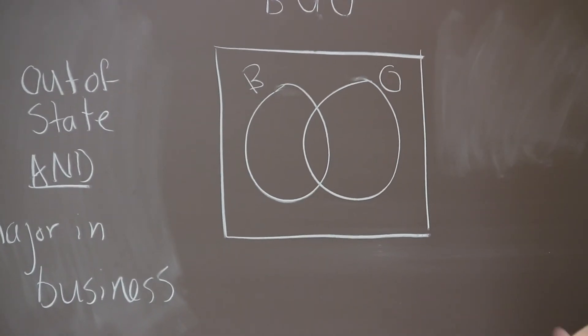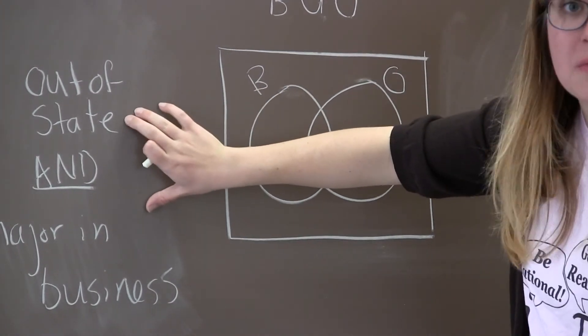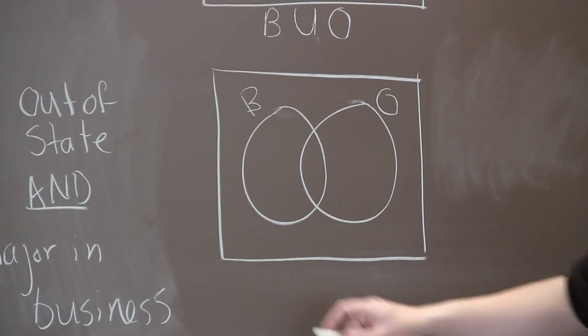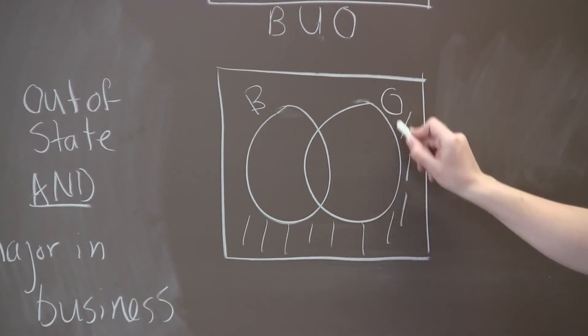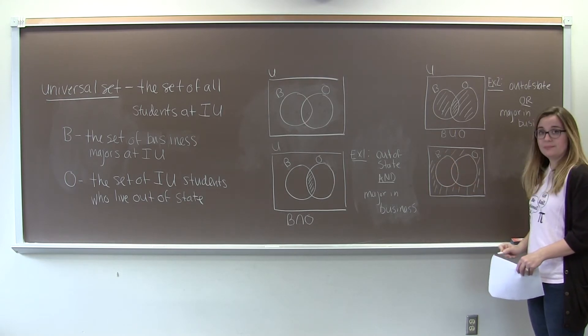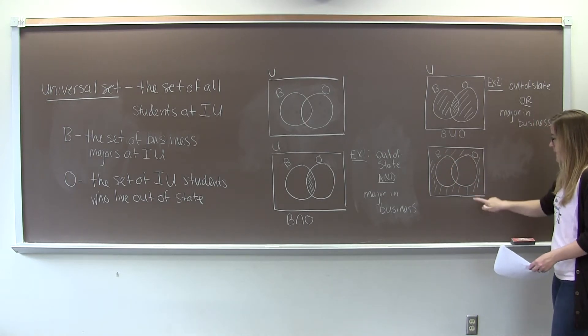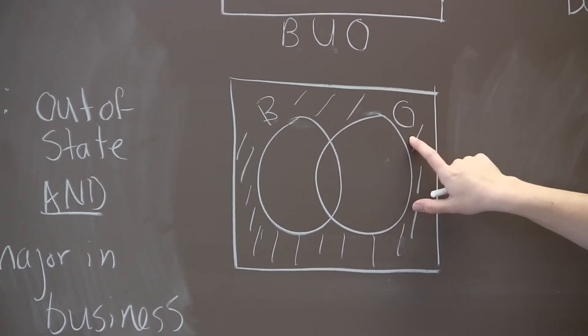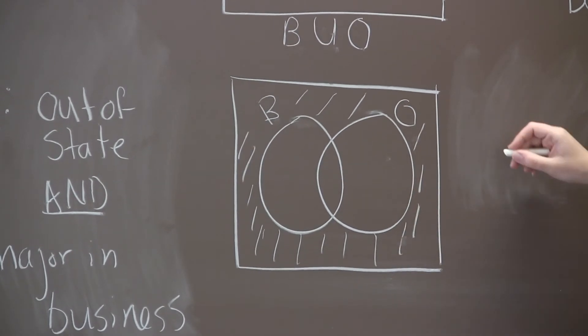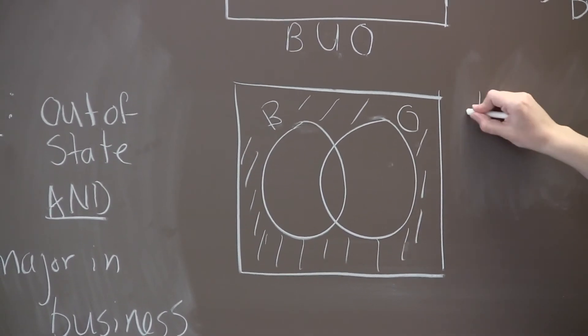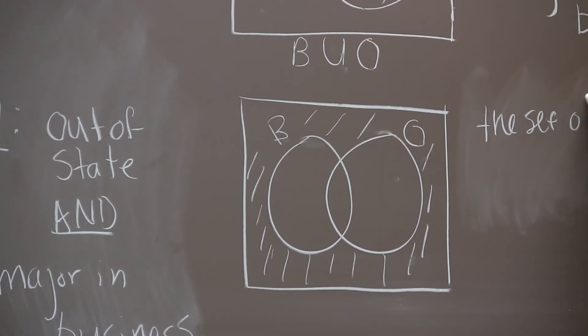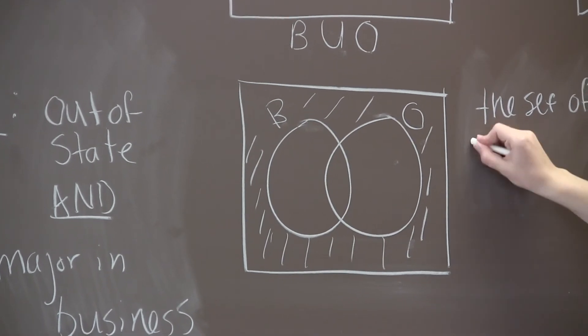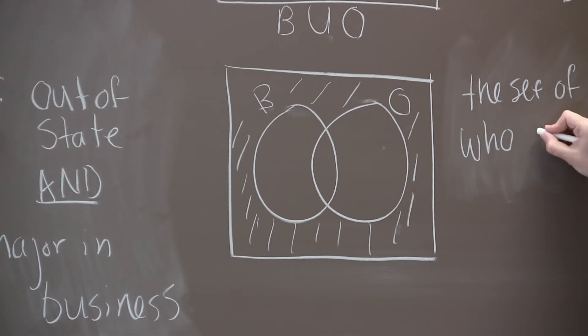So for the last example we're going to switch it up a little bit. Instead of giving you the verbal description of it, I'm going to give you the Venn diagram and we'll try to think about what that set is and describe it in English. So let's just shade in the region outside of those two circles. Okay, so what would this represent? Well, anybody that lives out here doesn't want to major in business and they don't live out of state, because they aren't in either of those two circles.